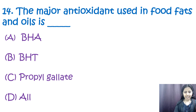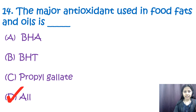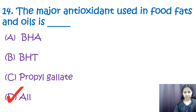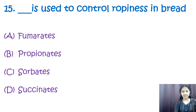Question number fourteen: the major antioxidants used in food fats and oils are — options: a) BHA, b) BHT, c) propyl gallate, d) all. The correct option is d, all. BHA (butylated hydroxyanisole), BHT (butylated hydroxytoluene), and propyl gallate are all synthetic antioxidants commonly added to fats and oils to prevent rancidity.